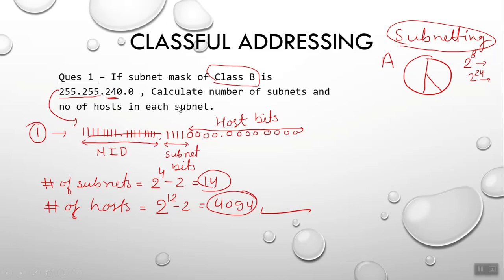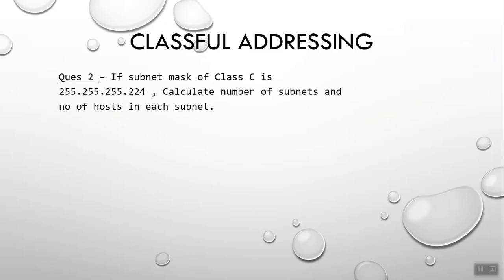If the subnet mask of Class C is 255.255.255.224, find the number of subnets and number of hosts in each subnet. To solve such questions for Class C, you know the first three octets are the network part and you only deal with the last octet.